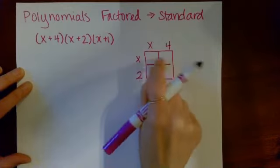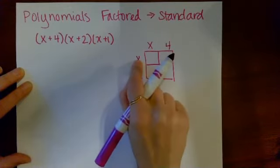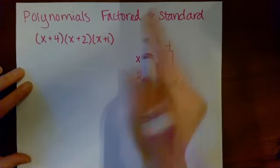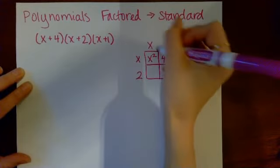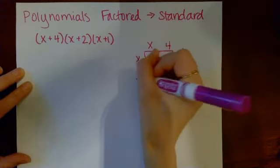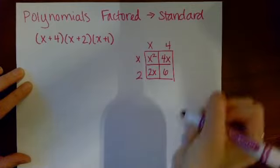Remember that in each square, I write the product of the terms that are outside the square. So when I multiply x times x, I get x squared. x times four will give me four x. Two times x is two x, and four times two is six.